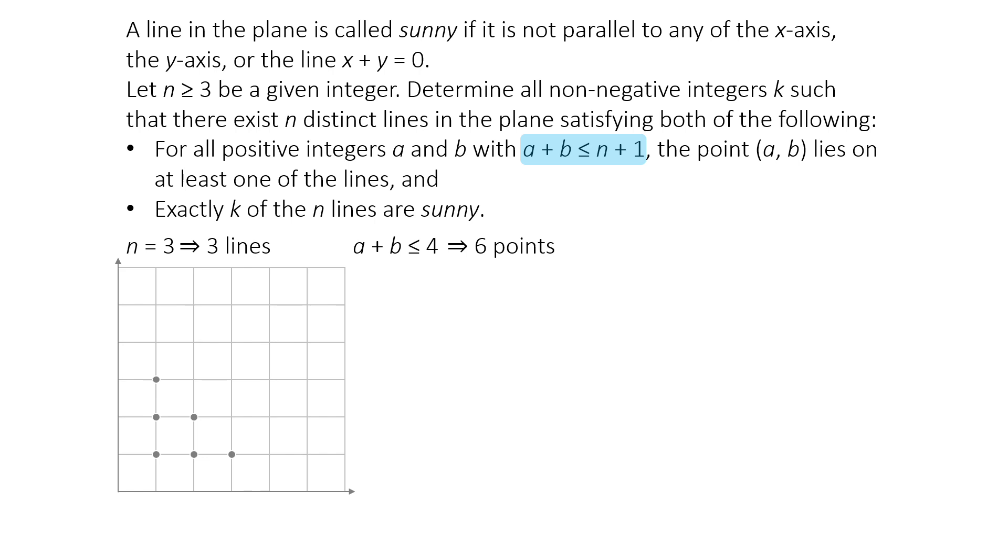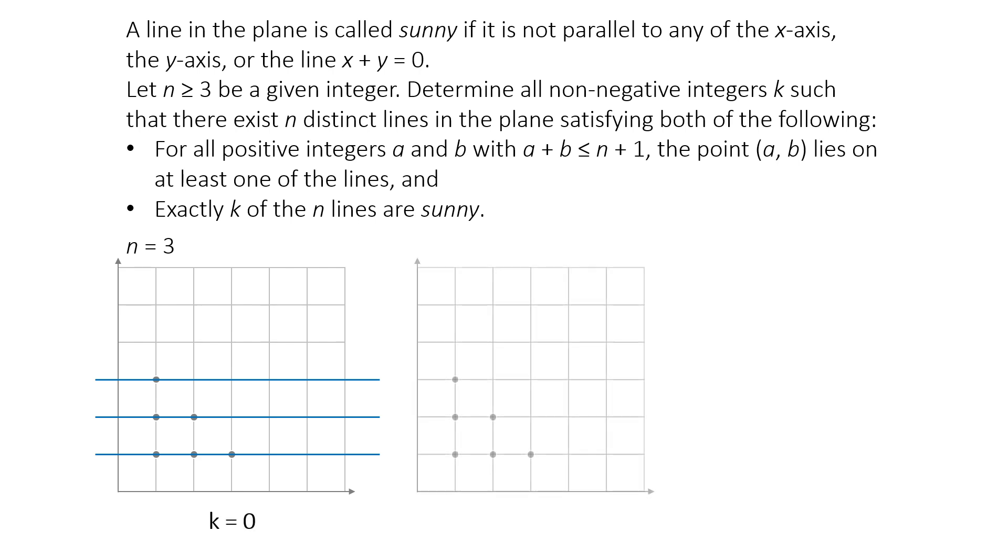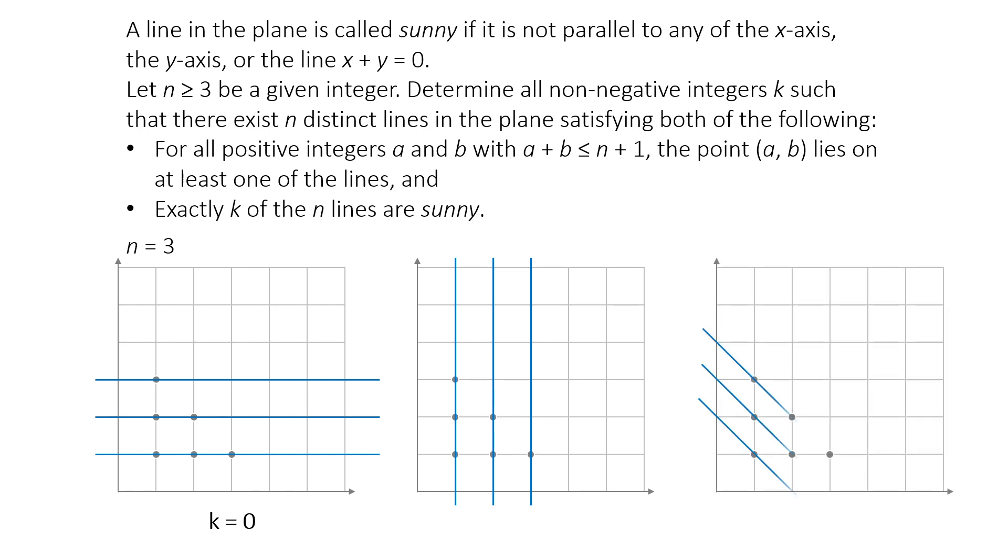Now, let's think about what kinds of lines we can use and how many of them can be sunny. We can draw horizontal lines through y equals 1, y equals 2, and y equals 3. That covers all the points. But horizontal lines are not sunny. In this case, none of the lines are sunny, and k is 0. This idea also works with 3 vertical lines or with 3 slanted lines parallel to x plus y equals 4.